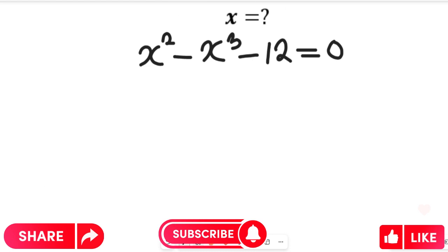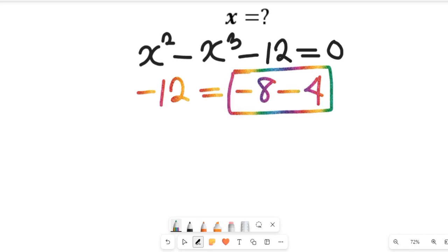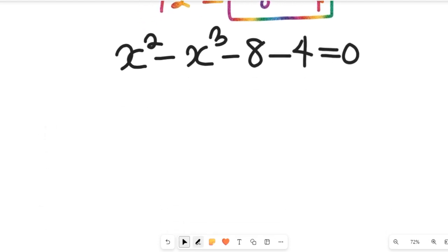Now having done this, I want us to do a substitution. This is where the logic comes in: minus 12 can be written as minus 8 minus 4, since minus 8 minus 4 will definitely give us minus 12. So we are going to substitute minus 8 and minus 4 for minus 12 in that expression. That expression will now give us x squared minus x cubed minus 8 minus 4, and this will be equal to zero.